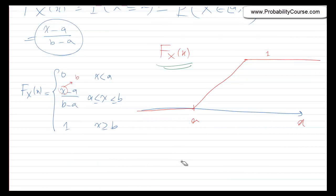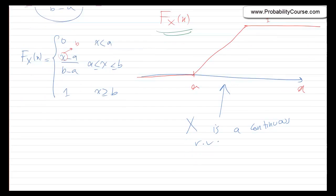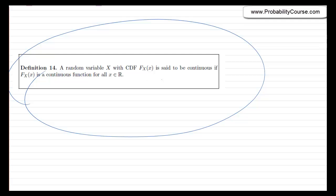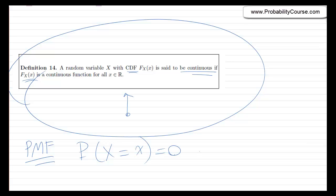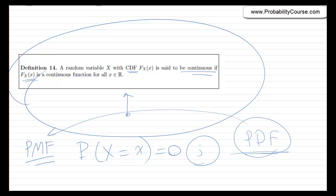We define a random variable x as a continuous random variable if its CDF is a continuous function. If we have a continuous random variable, we can still find its CDF, but the probability mass function is not well defined since P(X = x) = 0 for all x. In the next videos, we will define a new concept called the probability density function, which is similar to the PMF but defined for continuous random variables.